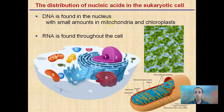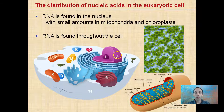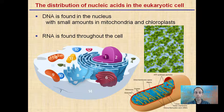The distribution of these nucleic acids in eukaryotic cells: DNA is found in the nucleus, with small amounts in the mitochondria and also in the chloroplast. So if you're a plant cell, you have DNA in the nucleus, in the mitochondria, and also in the chloroplast. Animal cells will have it in the nucleus and the mitochondria. In contrast, RNA is actually found throughout the cell, whether it's a plant cell or an animal cell.